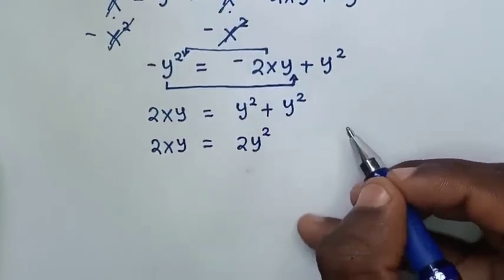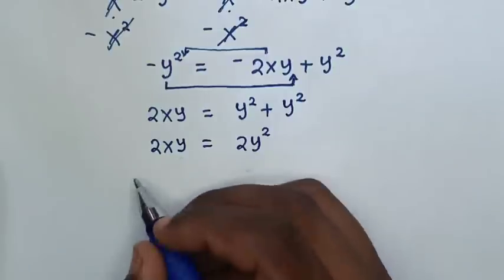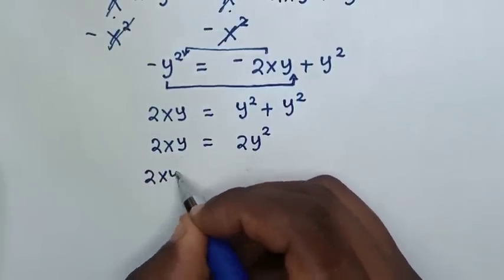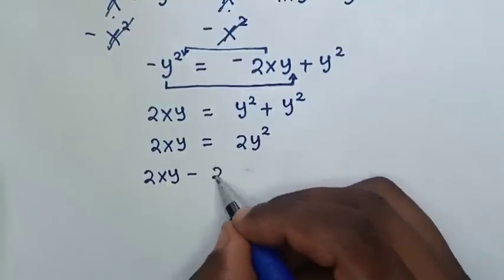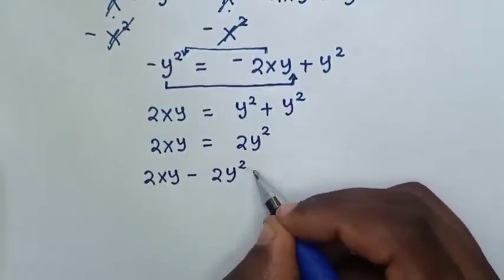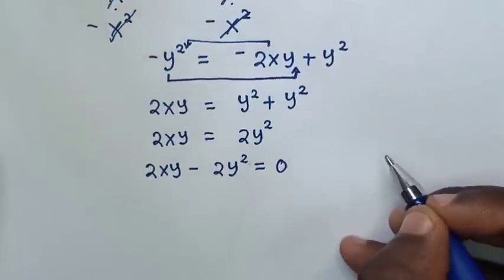Then, in the next step, we take 2y squared to the left side, so it will be 2xy minus 2y squared is equal to 0.